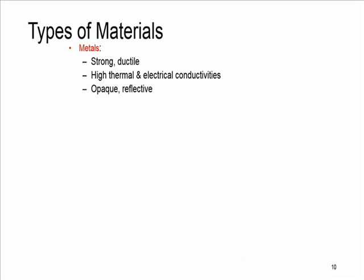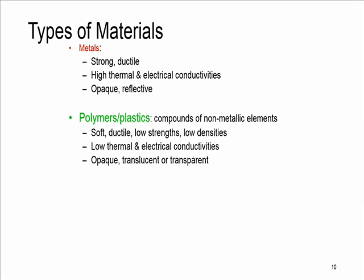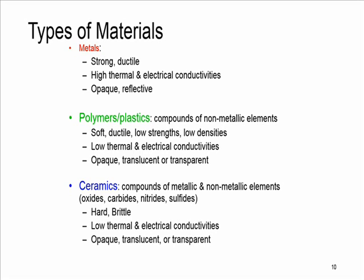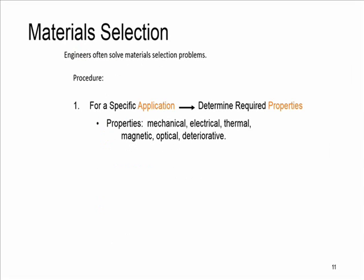The relation between structure, process, and properties results in different types of materials showing different behaviors and different properties. For example, we know metals are generally strong and ductile. Polymers are soft and less strong. And ceramics, which are compounds of metallic and non-metallic elements, are generally hard and brittle. An important outcome of knowing more about materials is to find the right material for an application. This is one of the main solutions provided by material science — what we know as material selection.